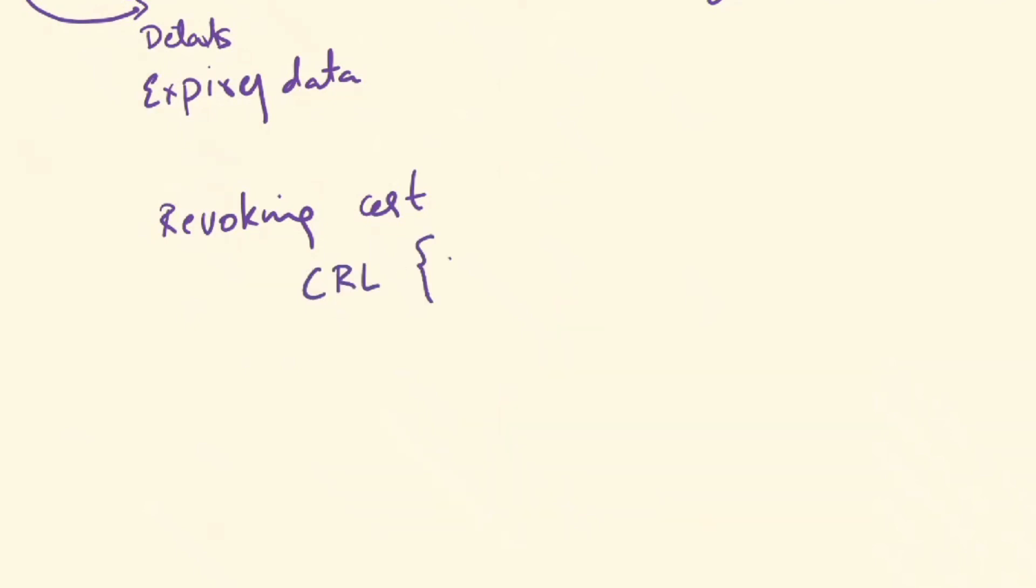The first method is called CRL, Certificate Revocation List. Here we include the Certificate Serial Number in this list. The problem with this is that there is a time delay and it requires more network bandwidth as well.